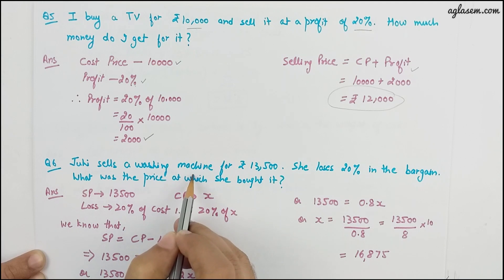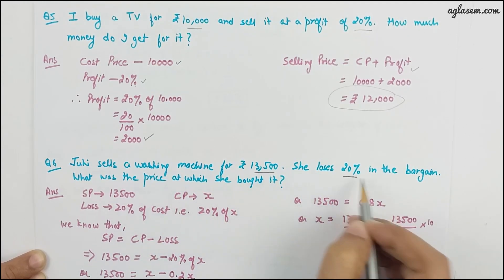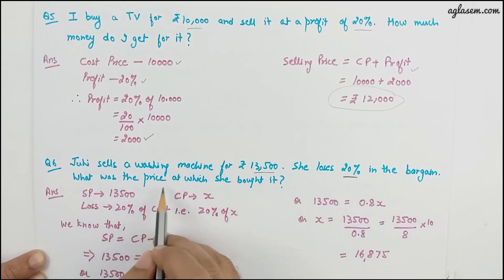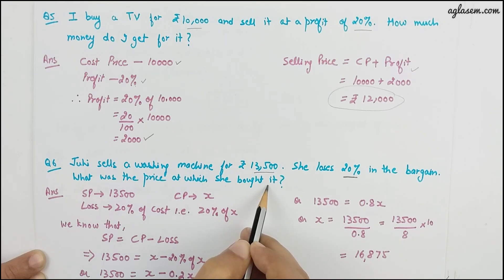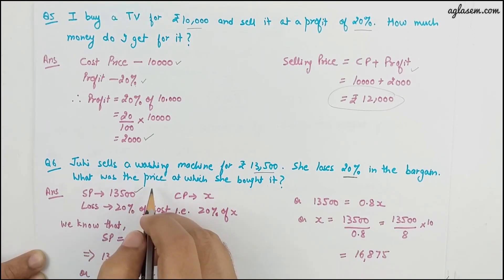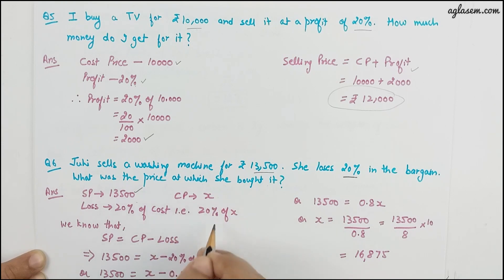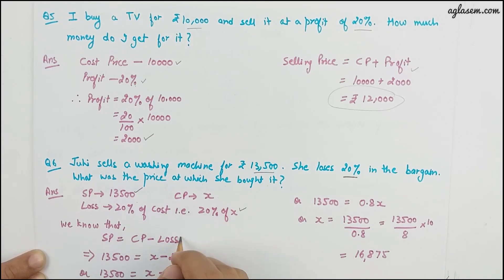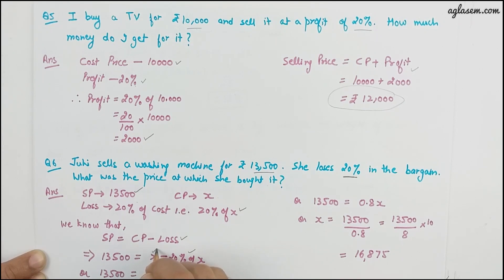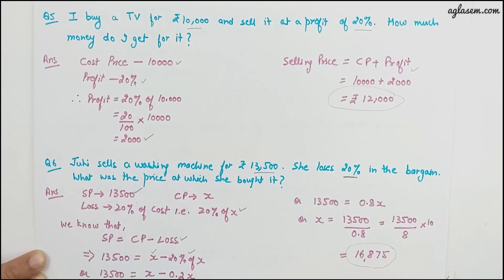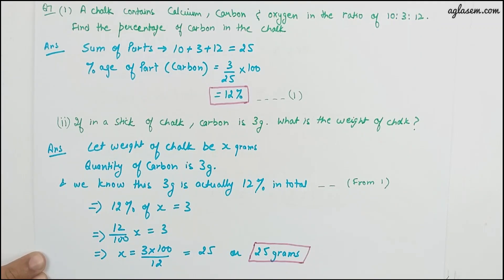Question 6: Juhi sells a washing machine for 13,500 and has lost 20 percent. We need to find what price she bought it at. Let cost price be x. She lost 20 percent of x, so selling price equals x minus 20 percent of x equals 13,500. Solving this, x equals 16,875 rupees — the actual purchase price of the washing machine.